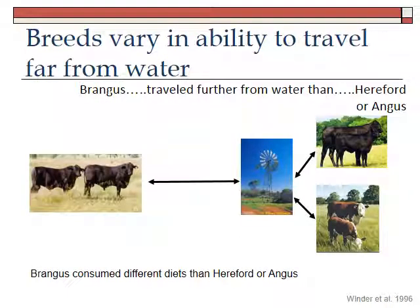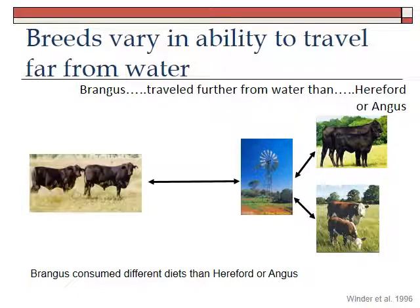Some other interesting research was done in New Mexico by Professor Winder. He looked at what parts of the landscape cattle used relative to water sites — specifically windmills. He found that Herefords and Angus, those British cattle, stayed much closer to water. They seemed to have higher water requirements and couldn't store as much water, so they didn't travel very far from water.